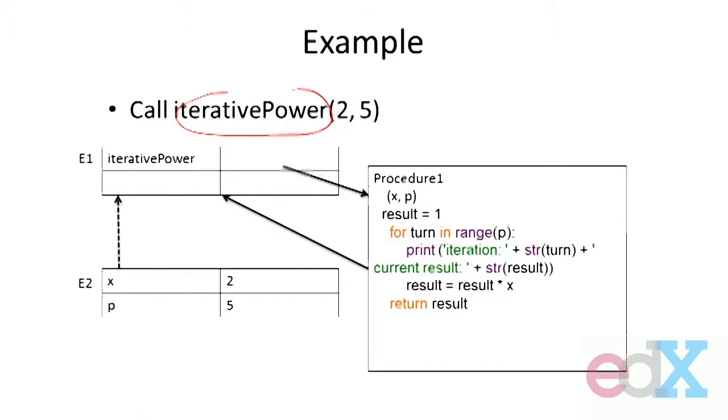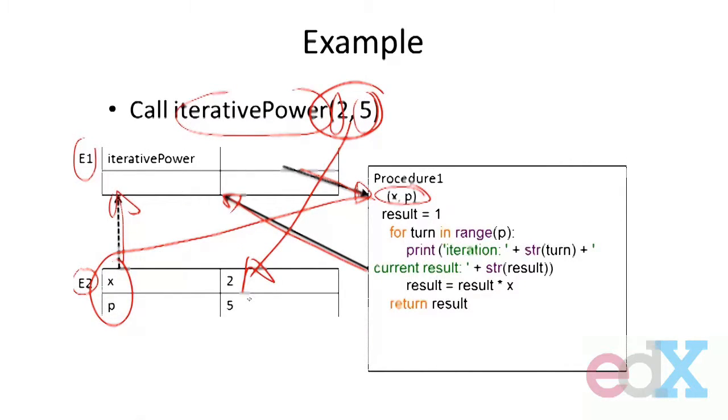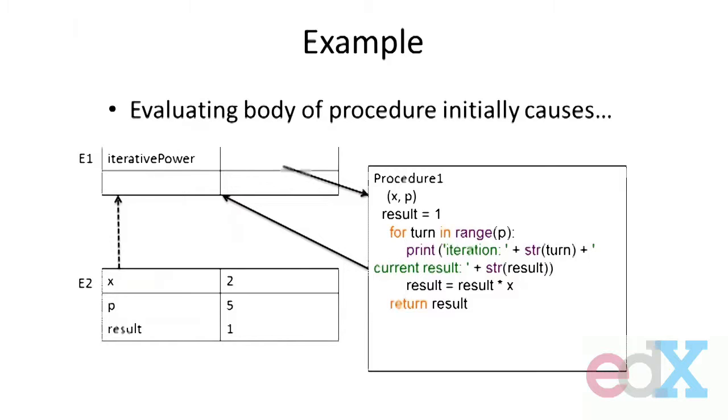If I now call iterative_power with 2 and 5, I get the value of this expression - it points to a procedure object. I get the values of each expression with respect to this environment. Then I create a new environment called e2. This new environment has as a parent the environment that the procedure object has as a parent. Inside that environment I bind these formal parameters to the values of the expressions, and then relative to this environment I evaluate the body.